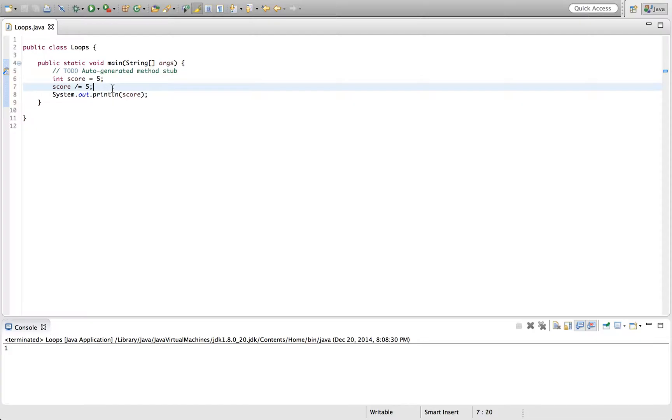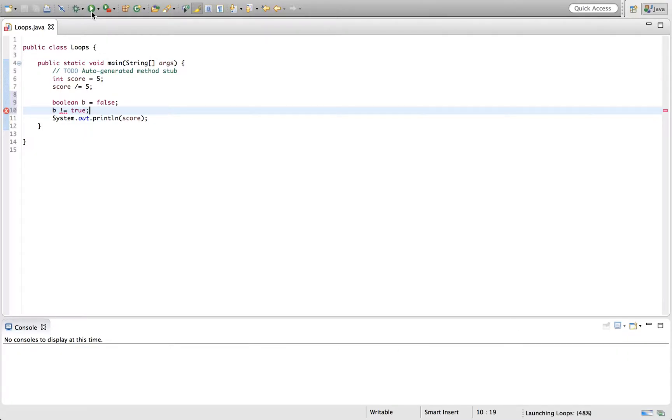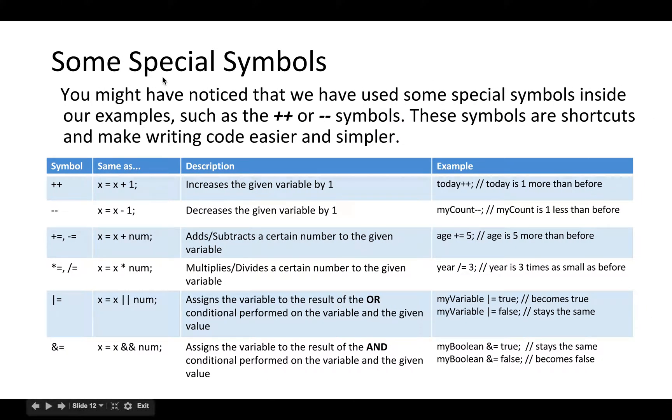And for boolean, there's also operators that are and equals and or equals. We don't need to go over them in too much depth. But for example, let's say and equals false. Then you could say boolean b equals false. Then b equals b and equals true. So, if false and true. And you don't see these that much. But once in a while, they do happen. You can do the same thing with and equals and or equals. They're both pretty similar. You don't see this that much. But you do see this once in a while.